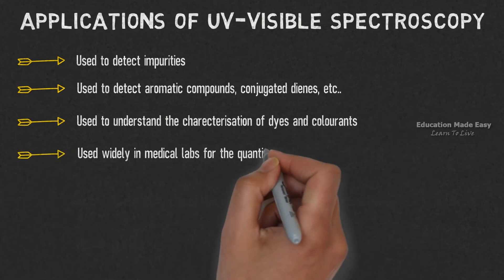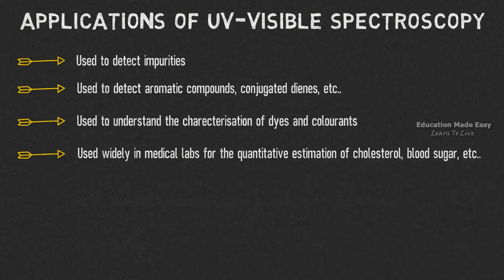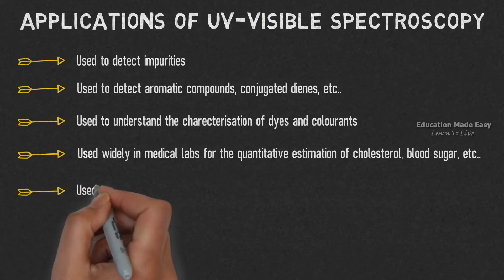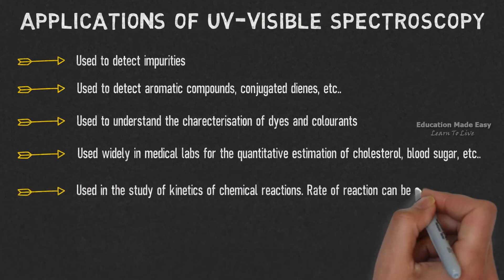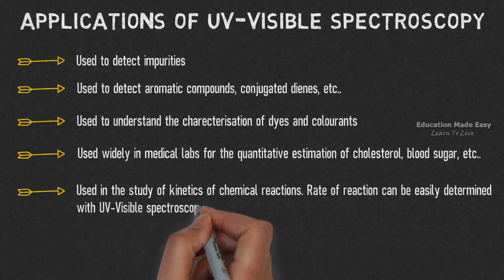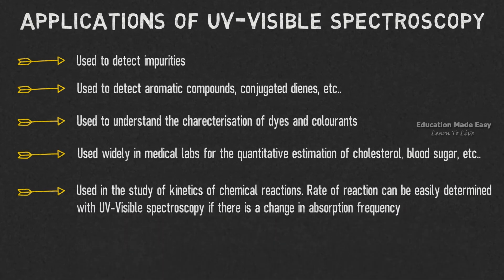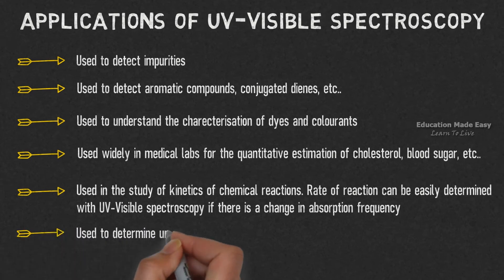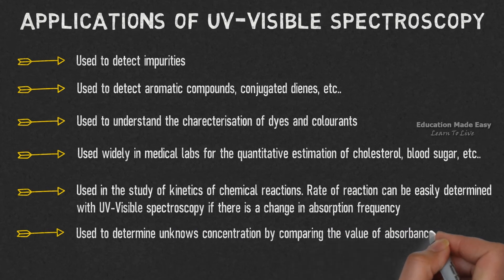It is used widely in medical labs for the quantitative estimation of cholesterol, blood sugar level, etc. UV-visible spectroscopy is used in the study of kinetics of chemical reactions — the rate of reaction can be easily determined with UV-visible spectroscopy if there is a change in absorption frequency. It is also used to determine unknown concentration by comparing the value of absorbance with a standard solution.